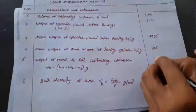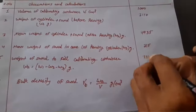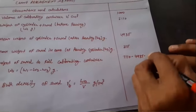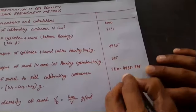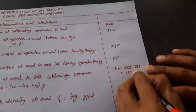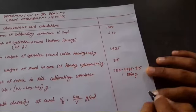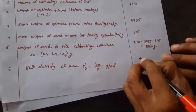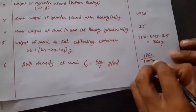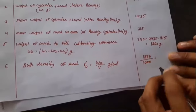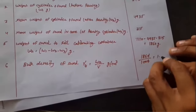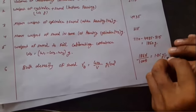Now we need the weight of sand filling the calibrating container, which is Wa = W1 − W2 − W3, which comes out to be 1860 grams. The bulk density of sand is weight of sand divided by volume of the container, which comes out to be 1.86 grams per cm³.